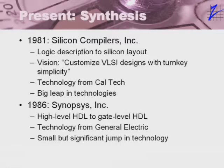In compilers, you write a fairly high-level description in C or C++, and what comes out is the object code — the ones and zeros that are executable by the processor. How that's done and how it's optimized is not a great concern to the programmer. Well, that was the idea of silicon compilers, and their stated vision was to customize VLSI designs with turnkey simplicity.